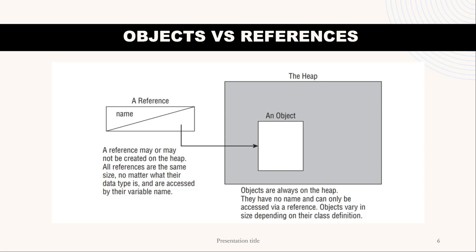This diagram on screen may clear up a lot of doubts. Realizing the difference between a reference and an object goes a long way towards understanding garbage collection. The new operator is really important to understand — it is used to create an object, and a reference holds a pointer to that object. We can consider a reference as kind of a map to an object.